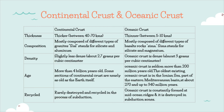Continental crust is more than 4 billion years old; some sections are nearly as old as the Earth itself. Oceanic crust is seldom more than 200 million years old. The oldest existing oceanic crust is in the Ionian Sea, part of the eastern Mediterranean basin, at about 270 to 340 million years old. Continental crust is rarely destroyed and recycled in the process of subduction. On the other hand, oceanic crust is constantly formed at mid-ocean ridges and destroyed in subduction zones.